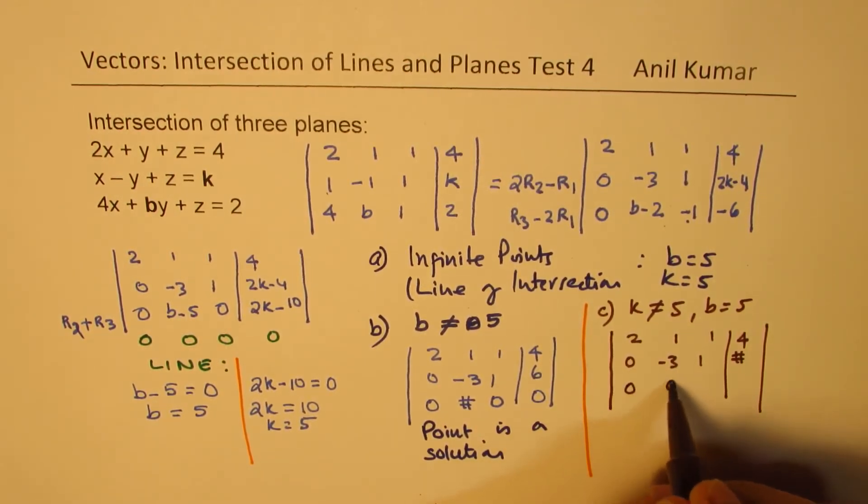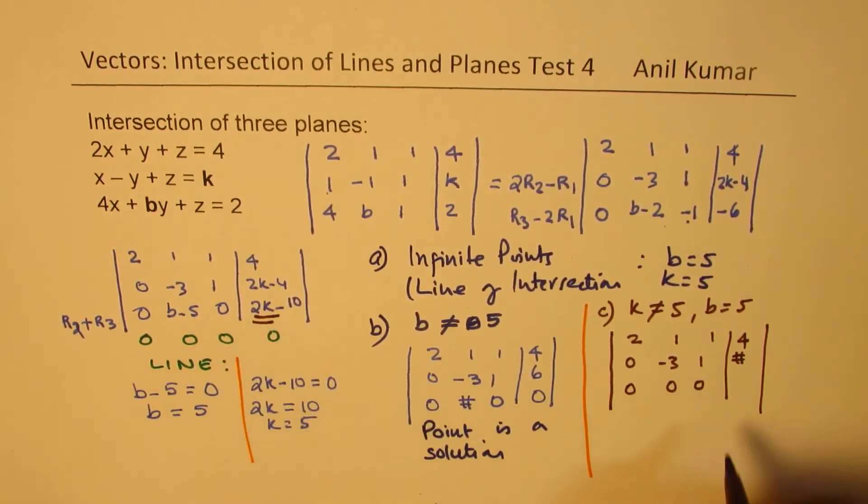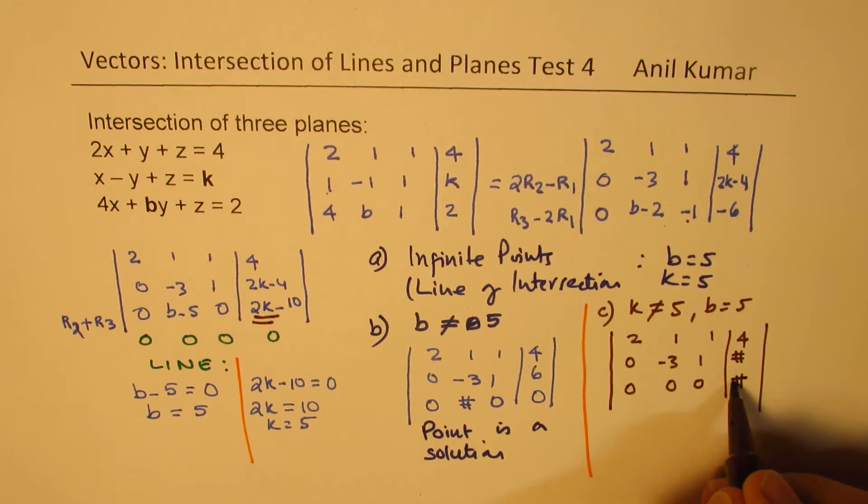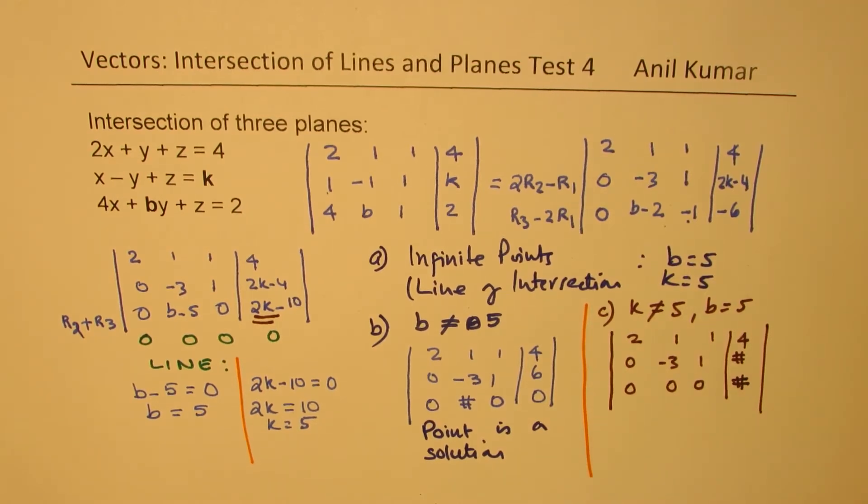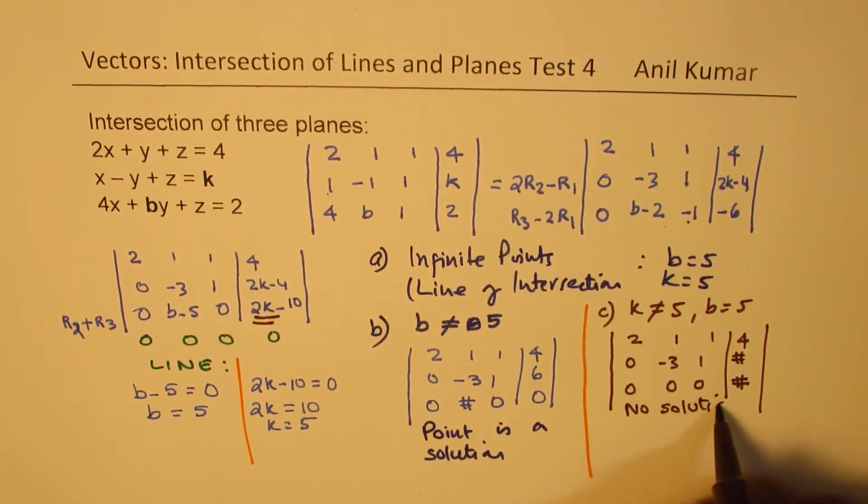But in this case, we have 0, 0, 0. But since there is k here, and k is not 5, we'll get a number here. So after going through this solution, now I realize that there is no solution.